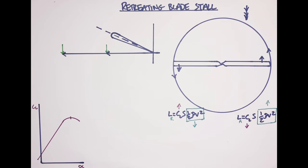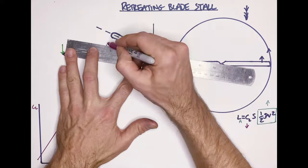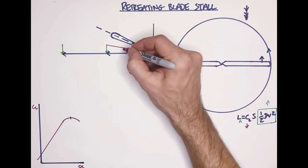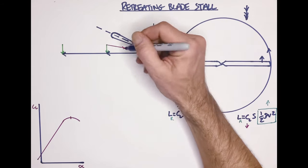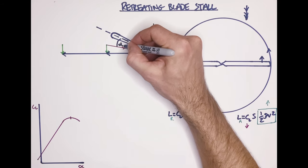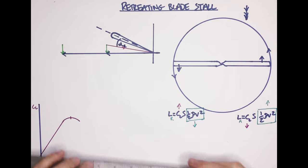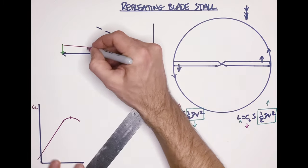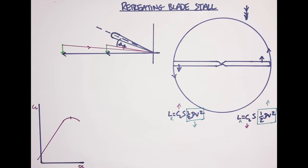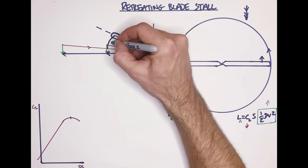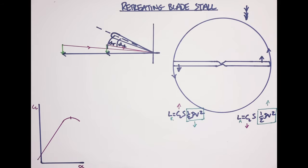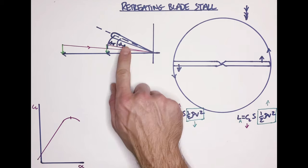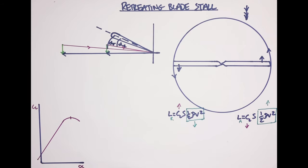You can instantly see where the problem lies. Drawing the relative airflow at the root, we have a relatively small angle of attack. But drawing the relative airflow at the tip, because of the induced flow we get a markedly shallower relative airflow which creates a much larger angle of attack. So the coefficient of lift is going to be much higher towards the tip than at the root.